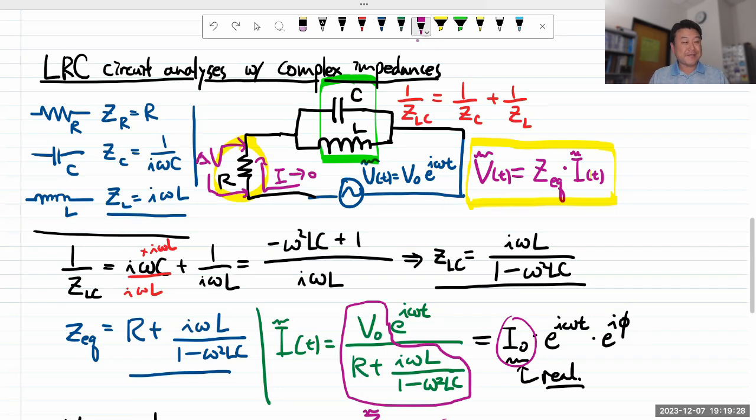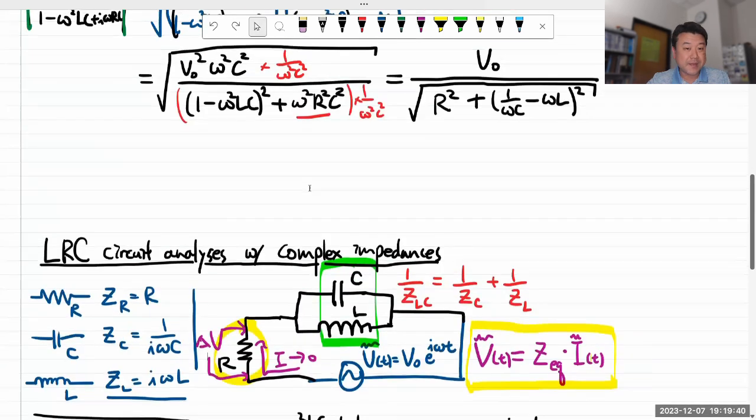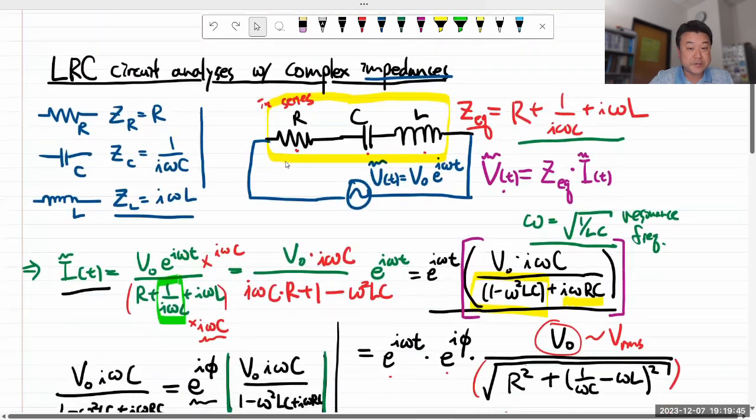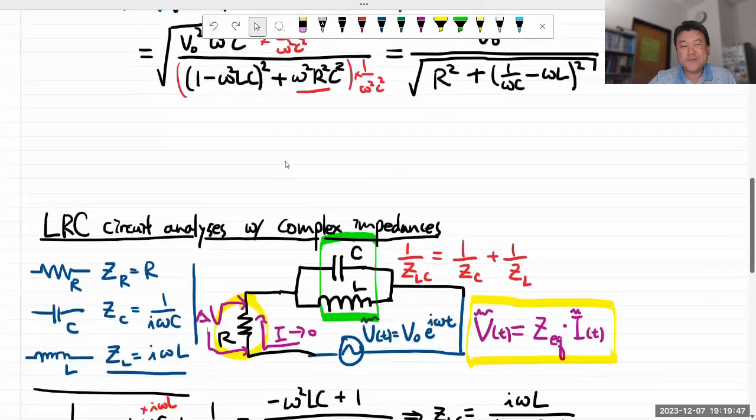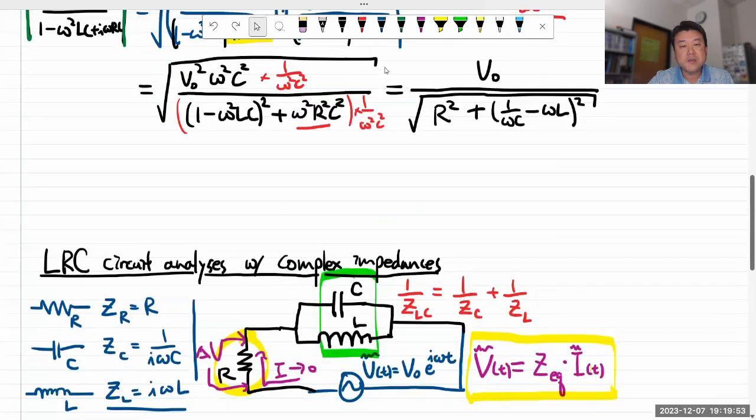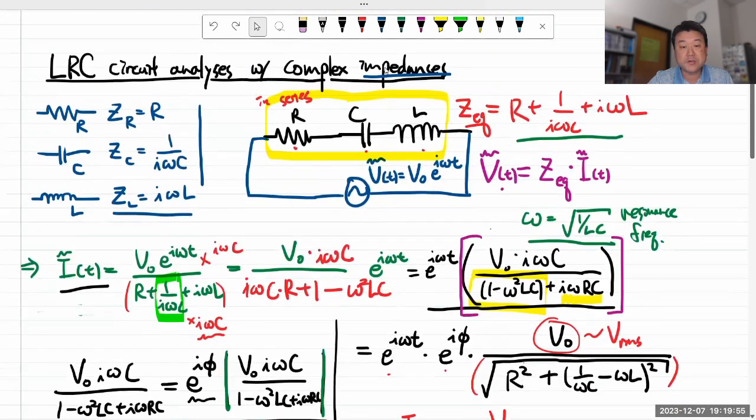So given that this is a lower division class and we don't have time to cover everything in circuits, given that both this and this gives you resonance behaviors, what's the benefit of working with this circuit, let's say in a lab setting, rather than working with this circuit?